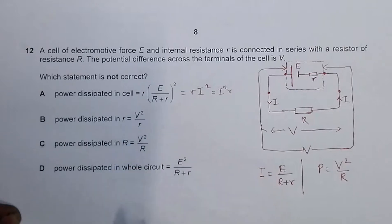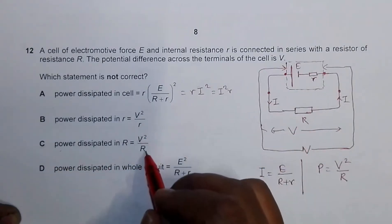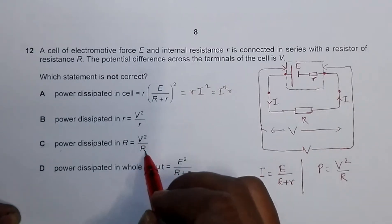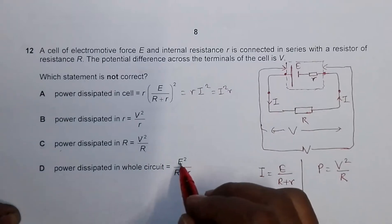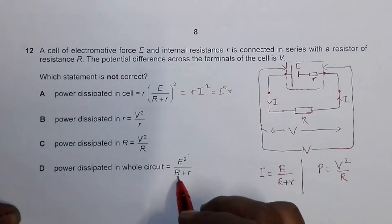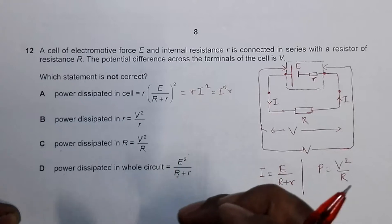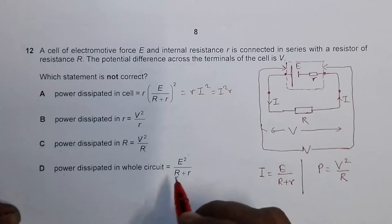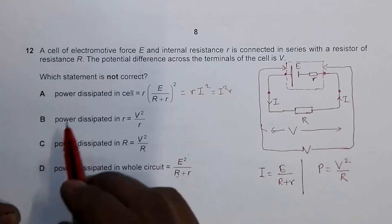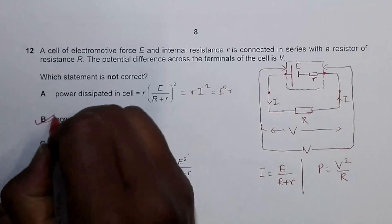Power dissipated in R equals V²/R — that is correct because V is indeed the PD across the external resistance R. Again, power dissipated in the whole circuit equals E² divided by total resistance (R + r), which is also correct. So among all the statements, only choice B is incorrect, making choice B the correct answer.